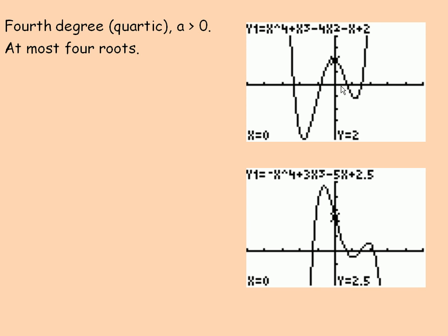It would be possible to draw this so that it doesn't cross in four places. For example, if I wanted it to cross in two places — and if I dip down and just touch before it goes back up — well, this one has two roots here and here, and then one more here, so it has three in total. I could actually make it have no roots whatsoever if it did this and went back up, so that one never crossed the x-axis at all. That's why it says it has at most four roots.